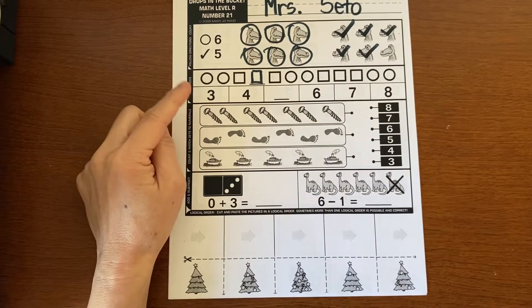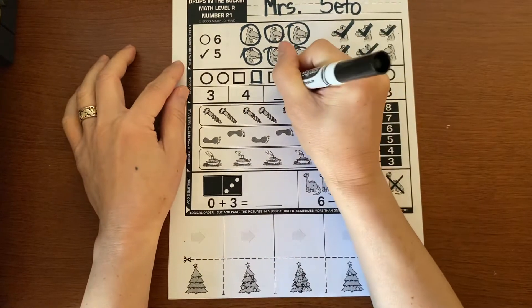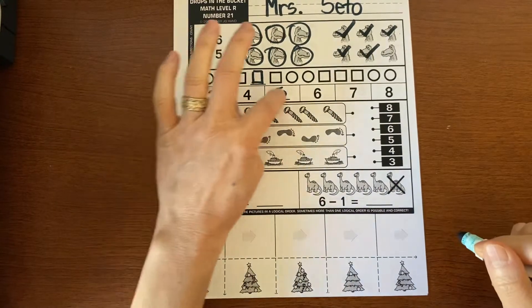Let's look at our numbers. Three, four, one number is missing. Five. Three, four, five, six, seven, eight.